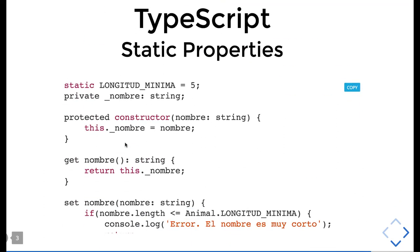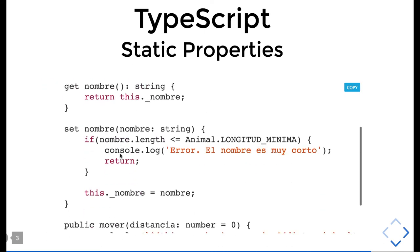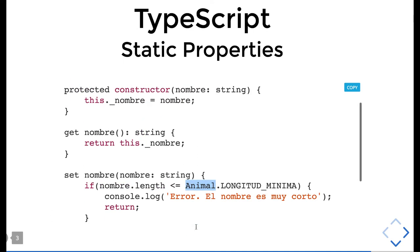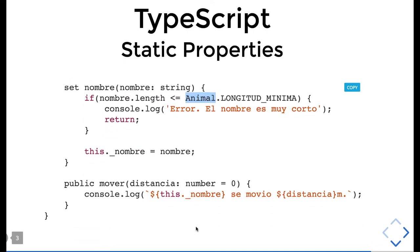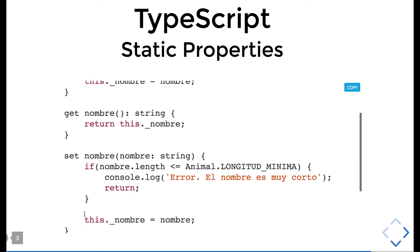Static properties are another thing you can declare in your class. For example, in class Animal, here I'm declaring a static property like 'static longitude_minima = 5'. You can access a static property directly from the class name — 'Animal.longitude_minima' — like this. Everywhere you use it, you don't need to create an object; you access it with the class name directly.